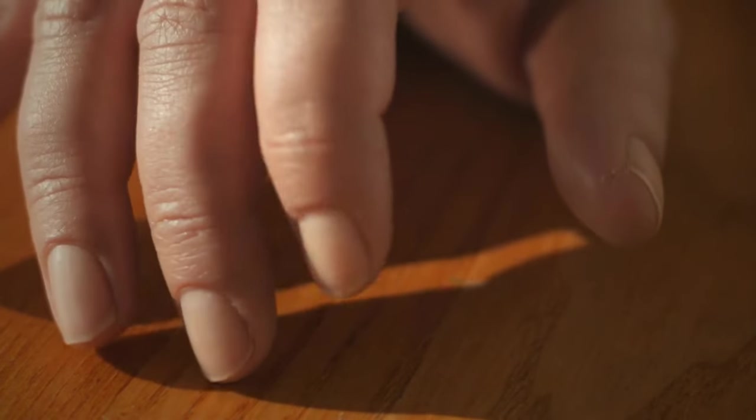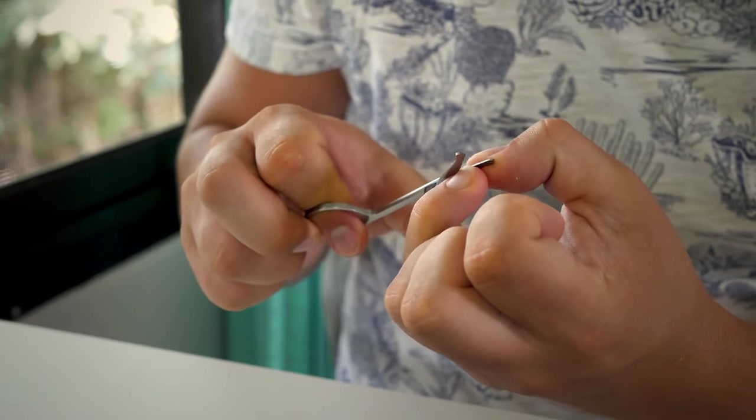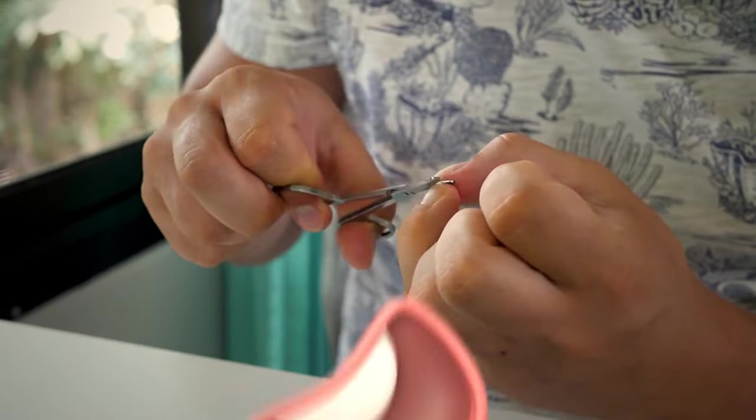As for why fingernails grow faster than toenails, the short answer may be the fact that we use our hands more than your feet. As such, our fingernails are more exposed, and we may have evolved to grow them faster. The more you use a certain part of your body, the more it becomes exposed to damage.